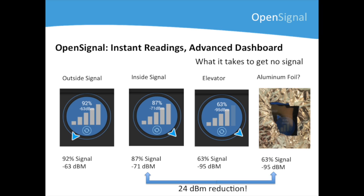And just for the fun of it, we tried something else. We knew, theoretically, that aluminium blocks signal, but wanted some empirical proof. As you can see, we got to the same level of signal as in the elevator by wrapping the phone with aluminium foil.